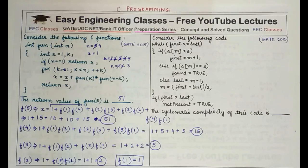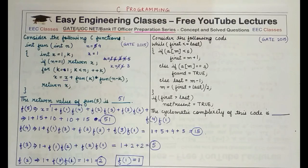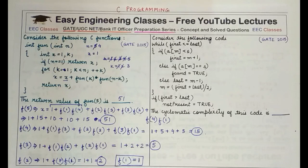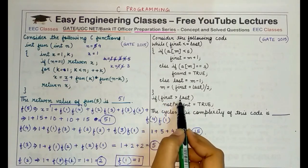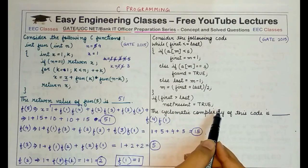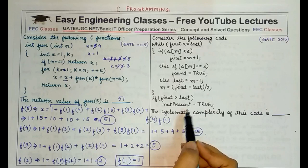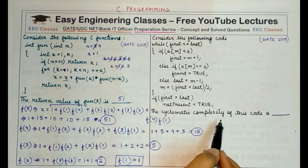If you are clear with how recursive calls work and how the value returned by previous recursive calls is used in computing the actual value, then this question is not at all difficult. Moving to the next question: consider the following code with a while loop — while first is less than or equal to last — and it's searching for an element, returning whether the element is present or not. The cyclomatic complexity of this code is to be found.